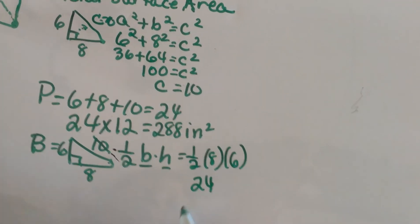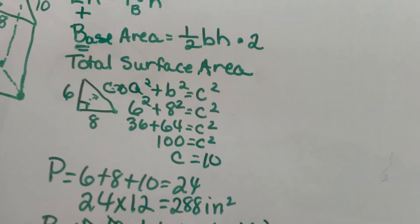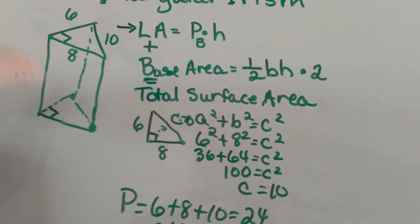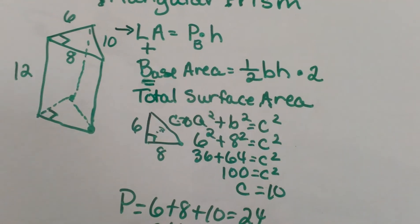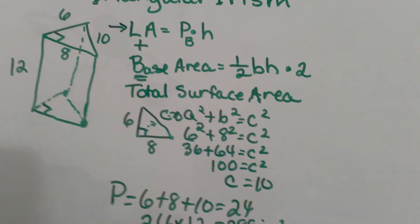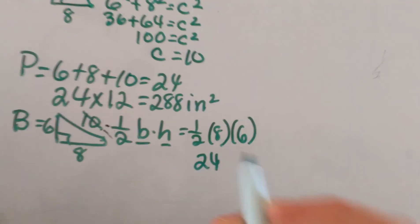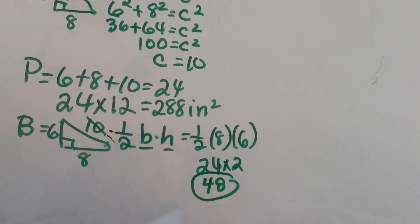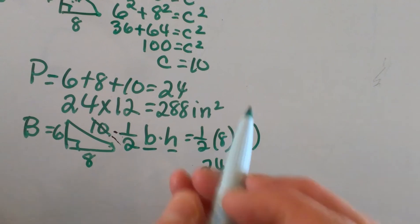But remember, in a prism I have two bases. Let's look at the picture again - up here we have a base and down here we have a base. Each base is 24, so I have to account for two. That's why I'm going to multiply 24 by 2, so that makes 48 as the area of my bases.